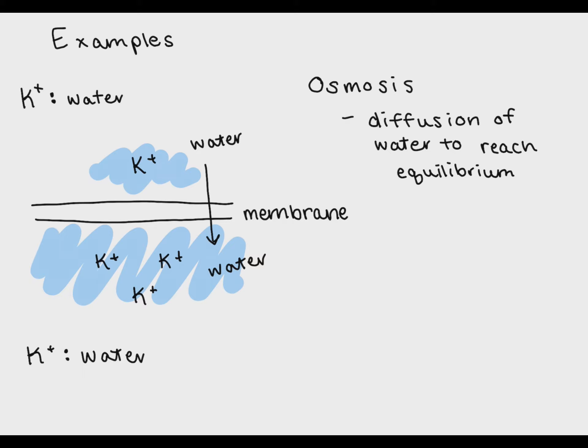This doesn't mean that the volume of water is the same on both sides of the membrane, but it does mean that the ratio of substrate or dissolved solutes - in this case K+ to water - is the same on both sides. And again, this equilibrium is dynamic. Water is still moving freely across the membrane, but the ratio of K+ to water is remaining the same on both sides.